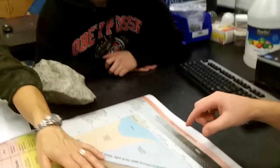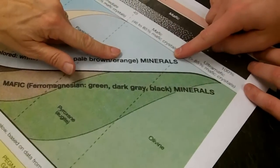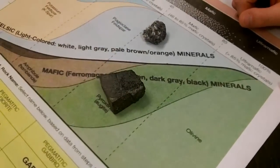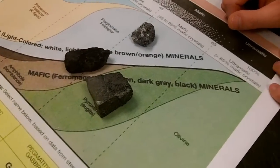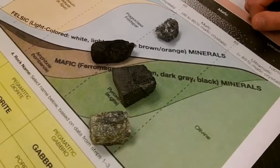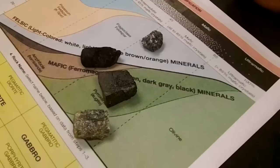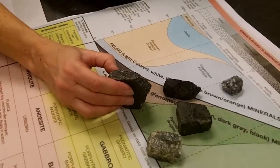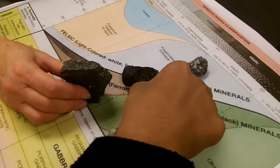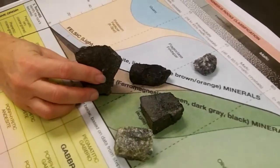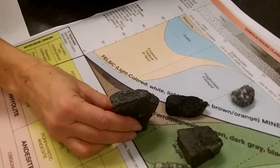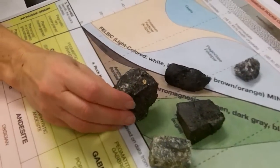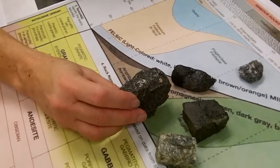Then we move on to the mafic minerals — the more calcium rich plagioclase feldspar, the darker feldspar, the pyroxene, maybe still a little bit of amphibole, and some olivine. Those would be the mafic rocks. If you take a look at this rock, can you find any of those minerals? A little bit of augite? Yeah. Can you see any long skinny hornblende crystals? Yeah — you can tell by the straight edges. So this would be a mafic rock.